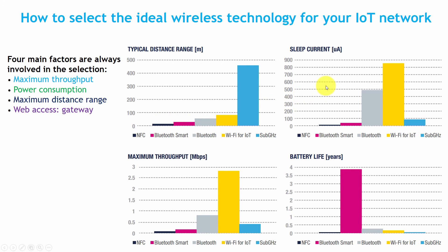If we discuss sleep current, Wi-Fi consumes more current than other devices. After Wi-Fi, Bluetooth Classic consumes around 500 microamperes typical current, then sub-gigahertz devices, then Bluetooth Smart, and then NFC. NFC consumes almost negligible power.